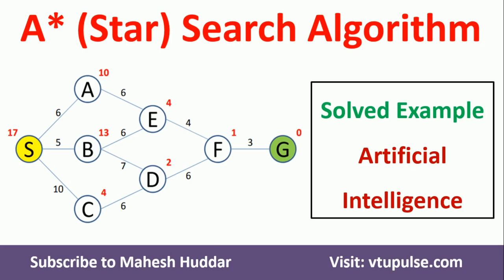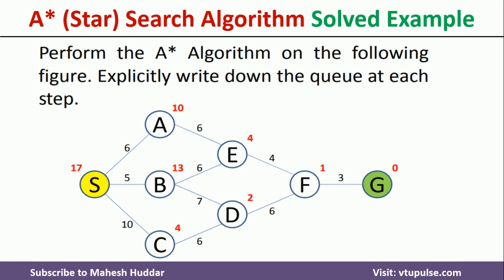Hi, welcome back. In this video, I will discuss how to apply the A* search algorithm to find an optimal path from the initial node to the goal node. This is the graph given to us. S is the initial node and G is the goal node, so we need to find an optimal path from S to G.